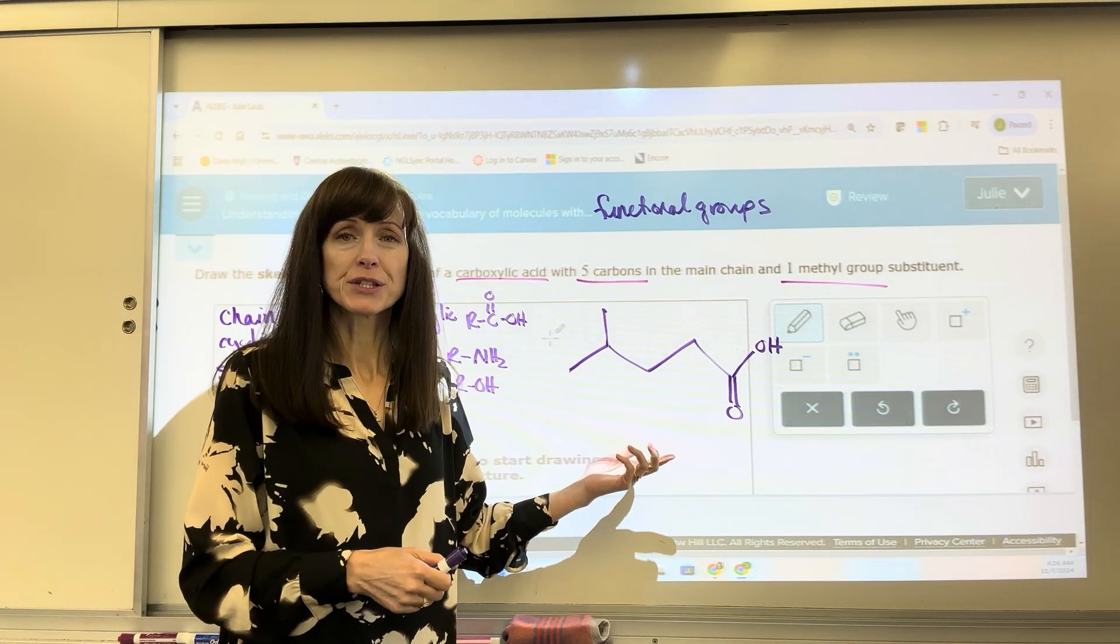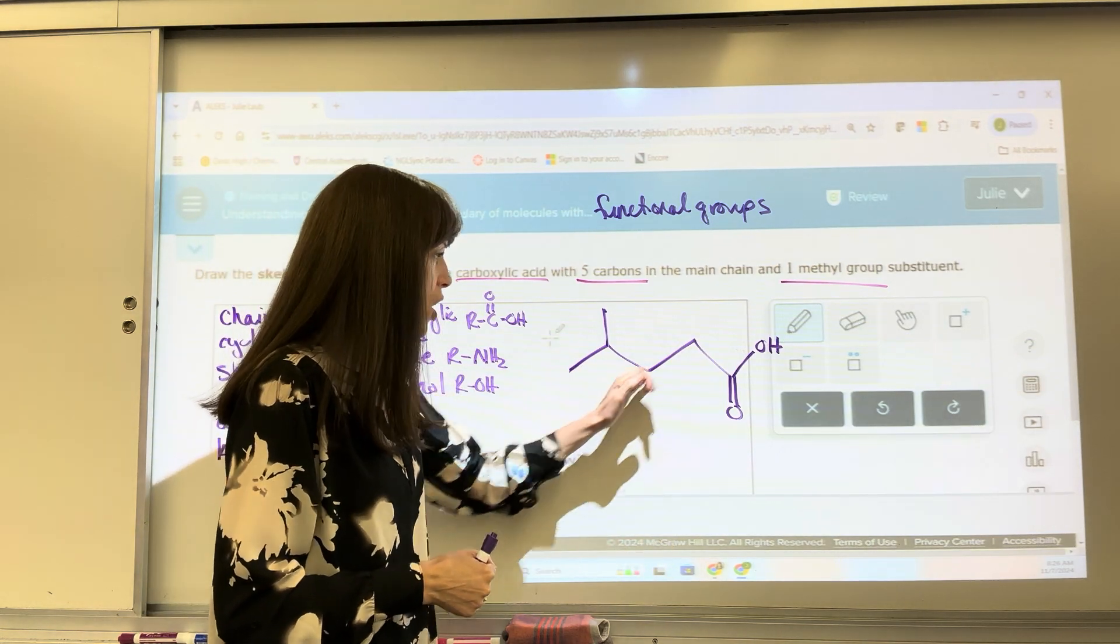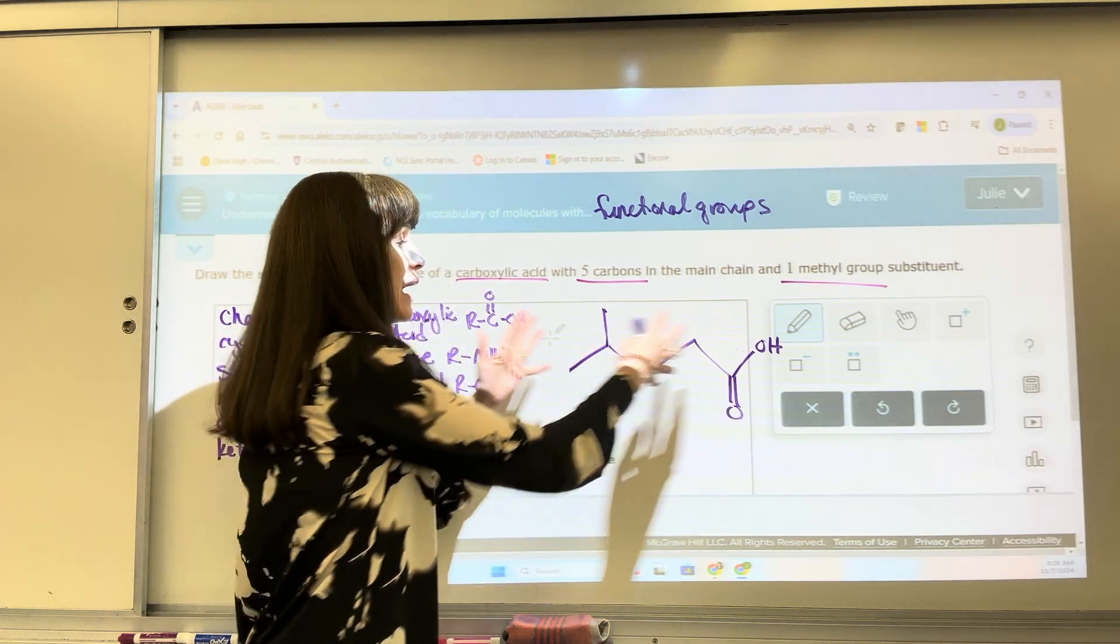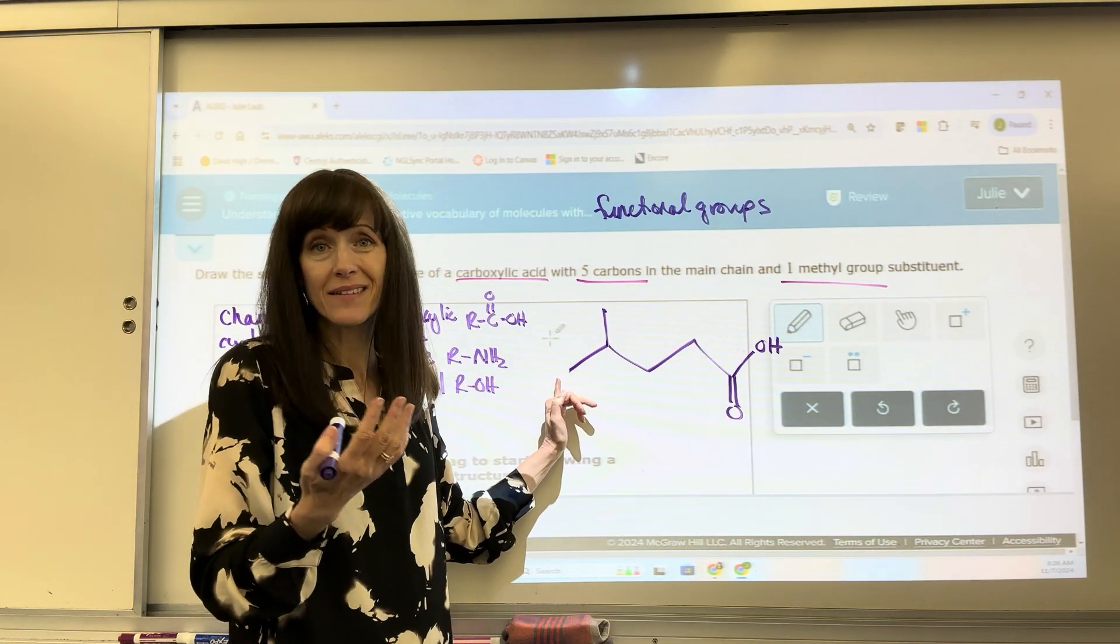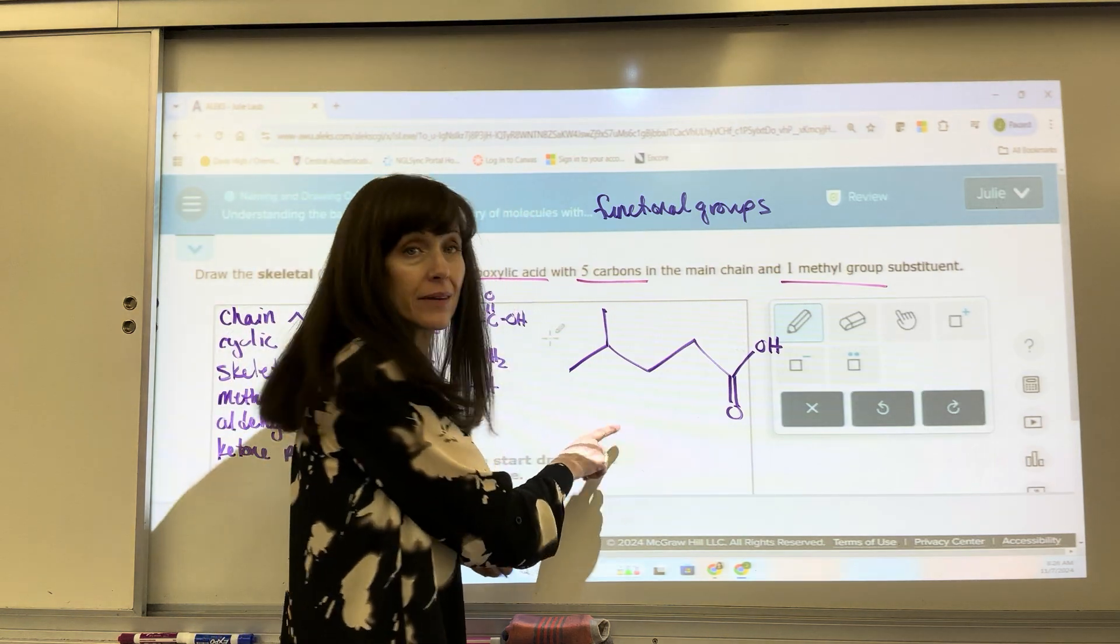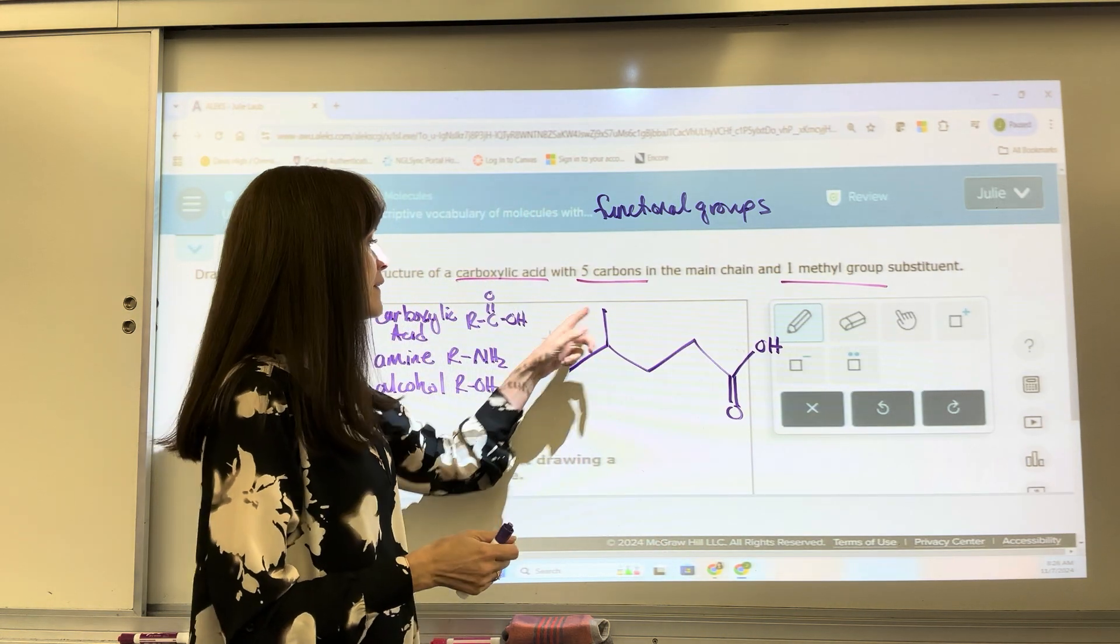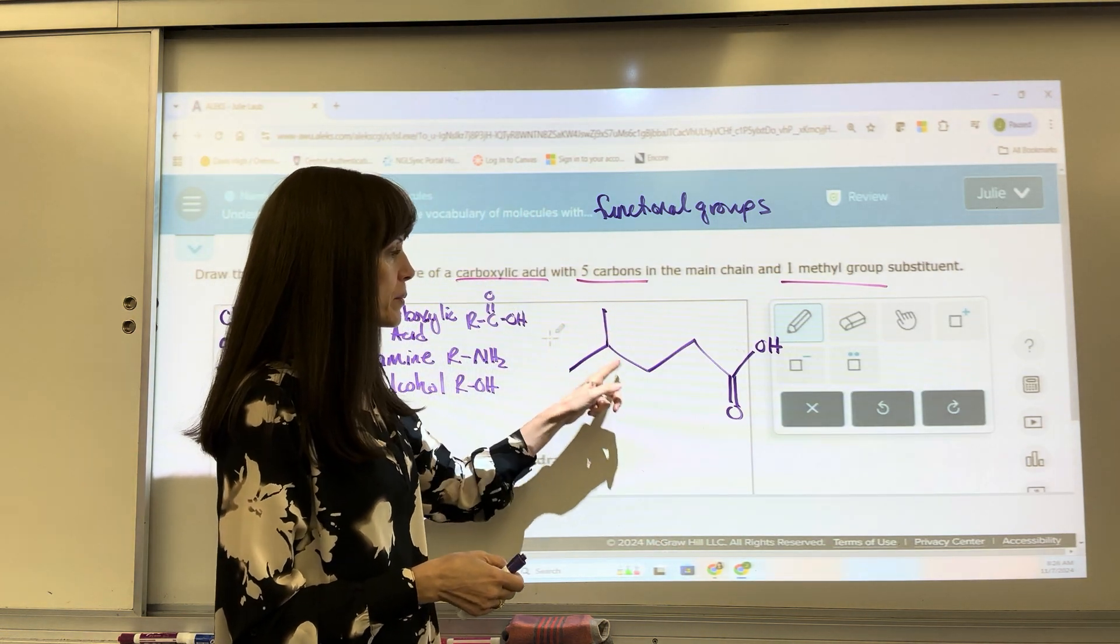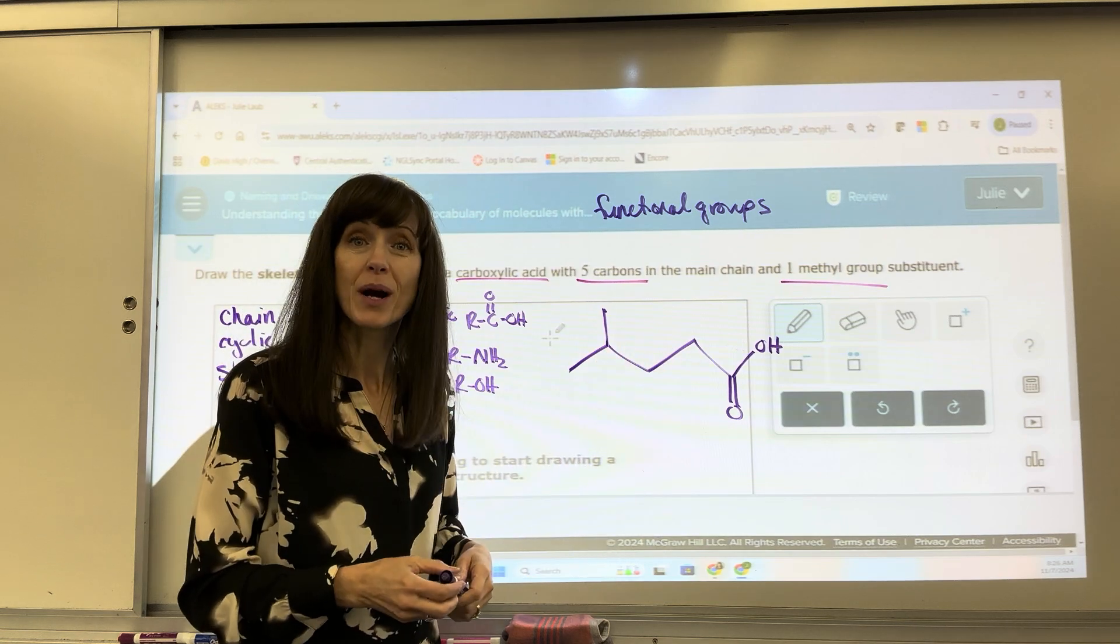ALEKS, when it grades you, is just going to be looking for those five carbons in the chain. On either end, I could have put the carboxylic acid on this end. I could have started by going down rather than up. Doesn't matter. And then that substituent, that methyl group, I could put it on any of those three carbons in the middle.